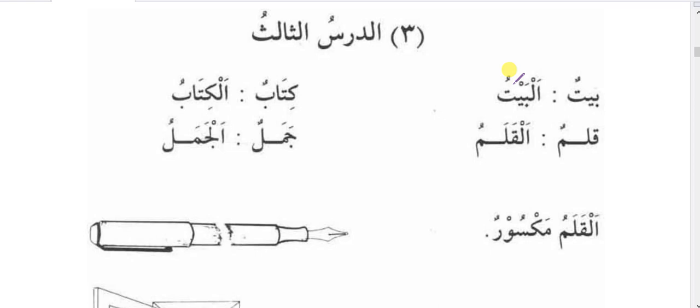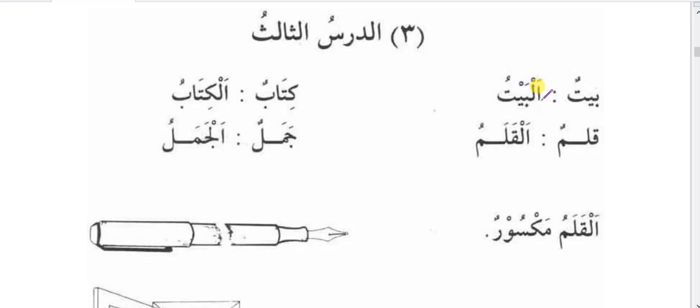These types of words which do not provide a very specific or exact intention of the speaker are known as nakera. The opposite is marifa, where you get the exact idea of what the speaker is conveying. For example, when I say 'Quran,' you immediately know the speaker is talking about that specific book. But when someone says 'book,' you get confused with many books. So whenever a word gives you the exact idea, that is marifa; if not, that is nakera. In Arabic, the sign of marifa is alif-lam, and tanwin (double zamma, fatha, or kasra) is the sign of nakera.